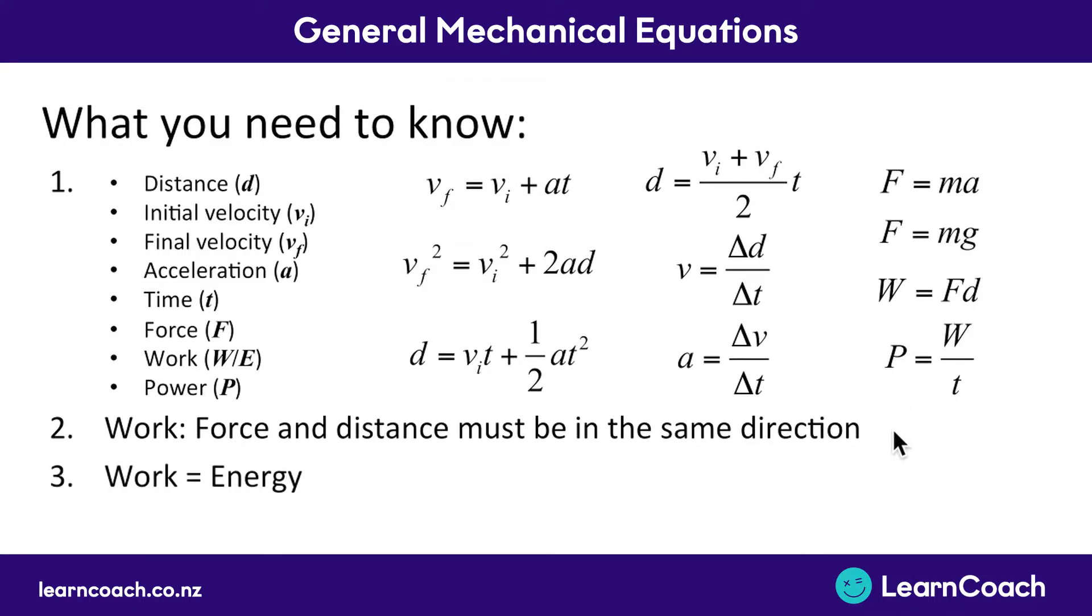The next thing you need to remember is that work and energy are the same things. Sometimes you need to find a work, but in order to get that, you need to use a formula for energy like we did in the previous example. And lastly, power is how fast work is done. So you calculate the work and then you divide that by how long it takes you to do that in seconds. And that gives you how much power measured in watts.